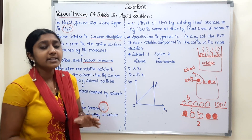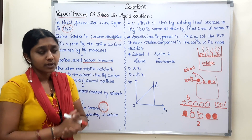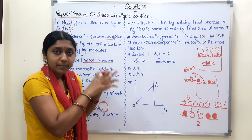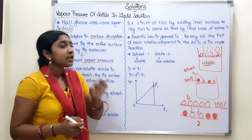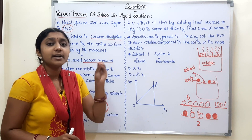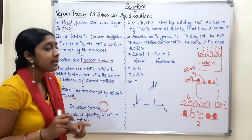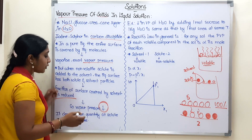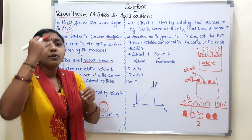This concept is very important. When we add a non-volatile solute to a solvent, the vapor pressure decreases. If you add the solute, the vapor pressure will decrease — not increase. The decrease in vapor pressure depends on the quantity of the solute added.